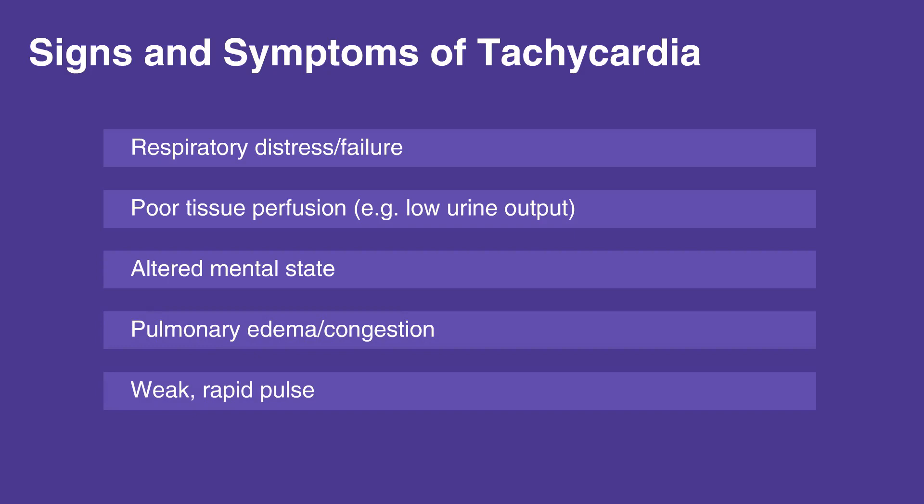There are several kinds of tachycardia, and they can be difficult to differentiate in children on ECG due to their elevated heart rate. The following is a list of the kinds of tachycardia and what happens during each specific tachycardic event.